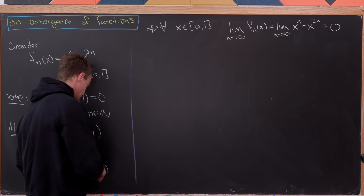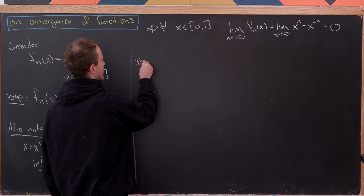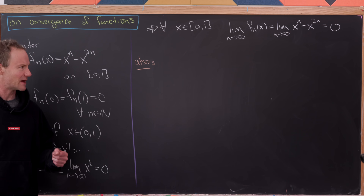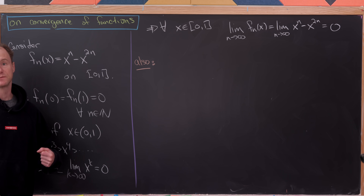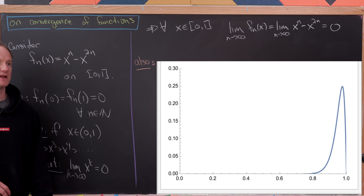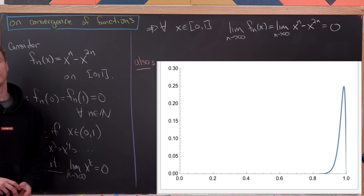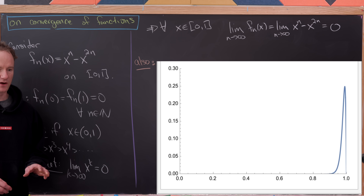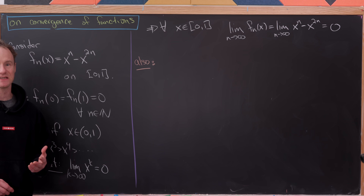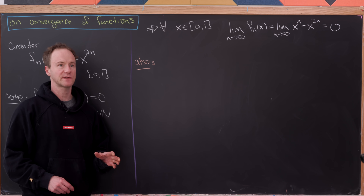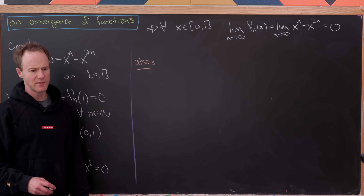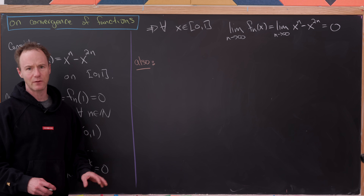Let's look at an animation of these sequence of functions being graphed one after another, from n equals 0 to 100. What you'll observe is that the maximum value of this function stays the same, but the place where that maximum occurs is changing. Let's explore exactly what's going on there.